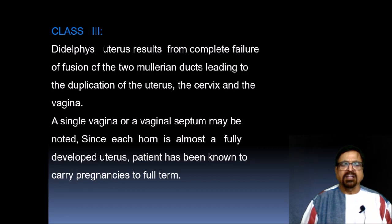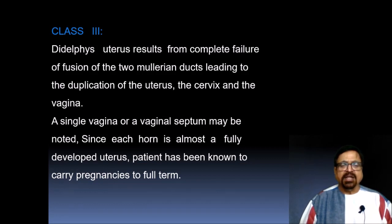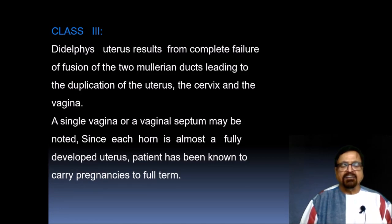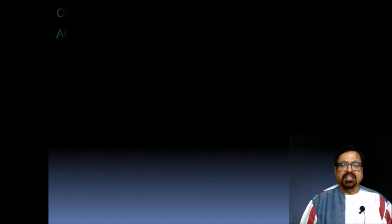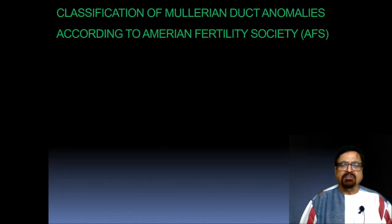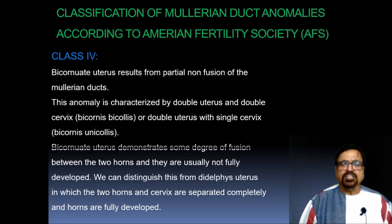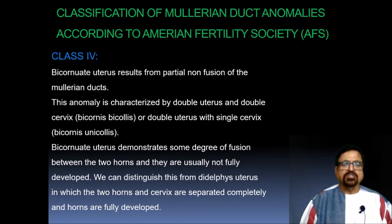Class 3 — uterus didelphys — results from the complete failure of fusion of the two Mullerian ducts, leading to a duplication of the uterus, cervix, and vagina. A single vagina or vaginal septum may be noted. Since each horn is almost fully developed, this patient has been known to carry pregnancies to full term. Similar to Class 1 and 2, delivery of a normal baby is possible with due precautions.